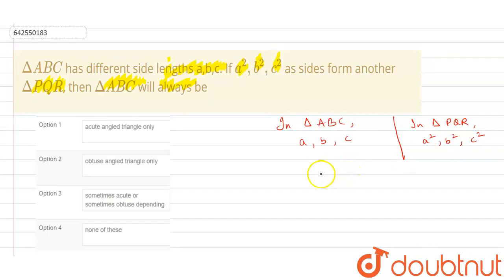First of all, we know a relation between the sides of a triangle, which is B plus C will always be greater than A. That means sum of any two sides will always be greater than the third side. This is a property of a triangle.